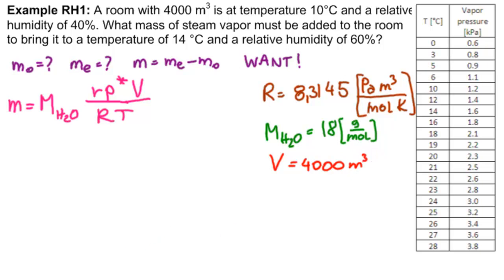So let's calculate m0. m0 equals 18 grams per mole. R is 40%, so 0.4. There's no unit on that. P star 0. What was the temperature? 10 degrees. 10 degrees. 1.2 kilopascals. 1.2 kilopascal. And then we have V equals 4,000 meters cubed.